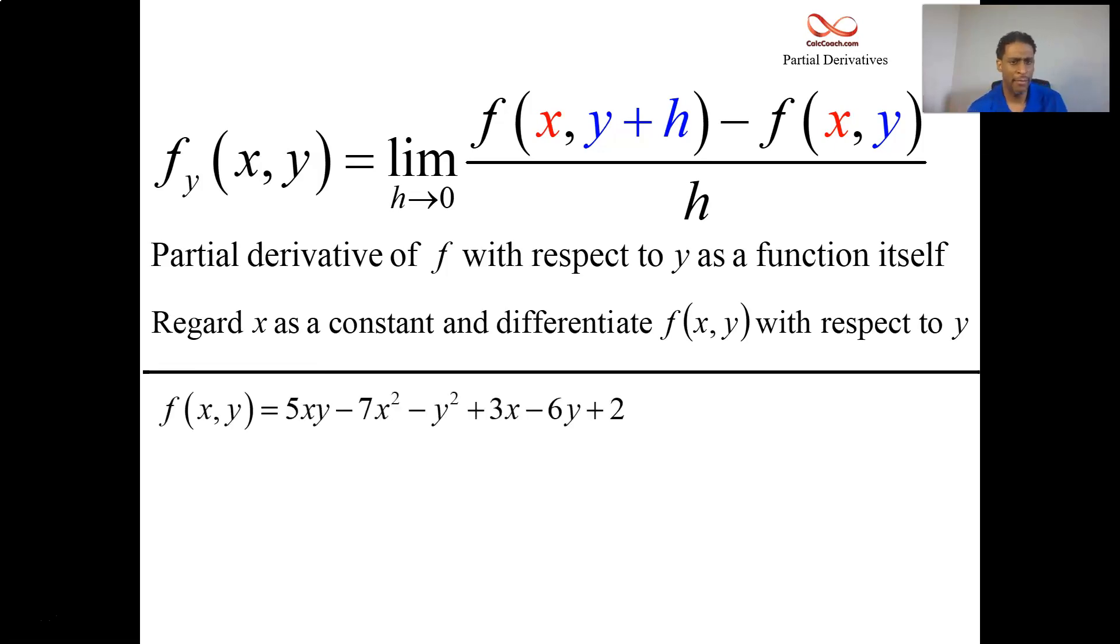Same function as last time, but now we're looking for the partial with respect to y. Color coded here, where I change all my y's into magenta. All my terms that just have x's in them, I make them red.